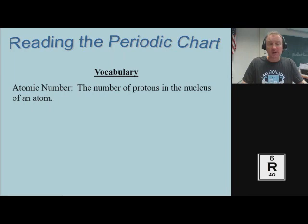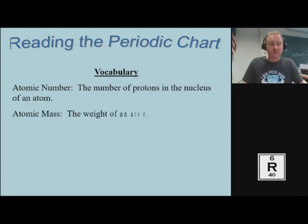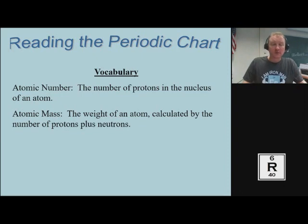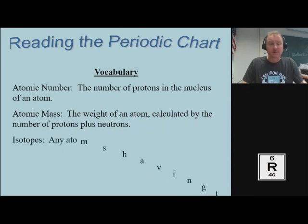So we're going to talk about atomic number. This is the number of protons in the nucleus of an atom — you could really interchange atomic number with the amount of protons an element has. The next concept is atomic mass: the weight of an atom calculated by the number of protons plus the number of neutrons. So the protons and the neutrons together make up the atomic mass.